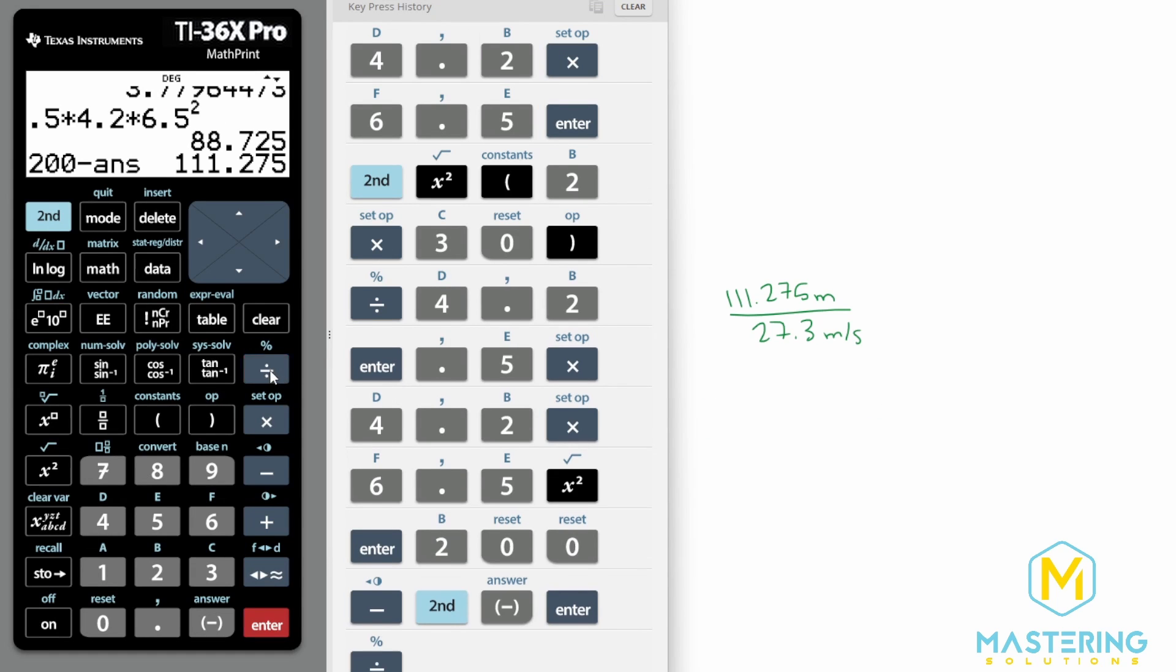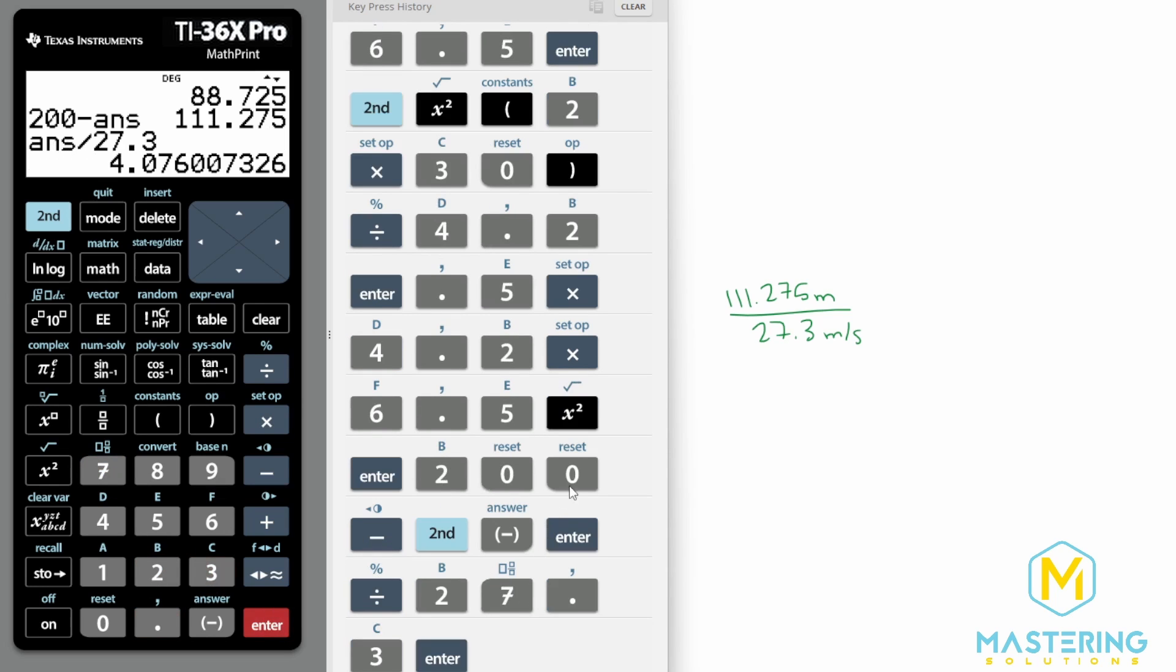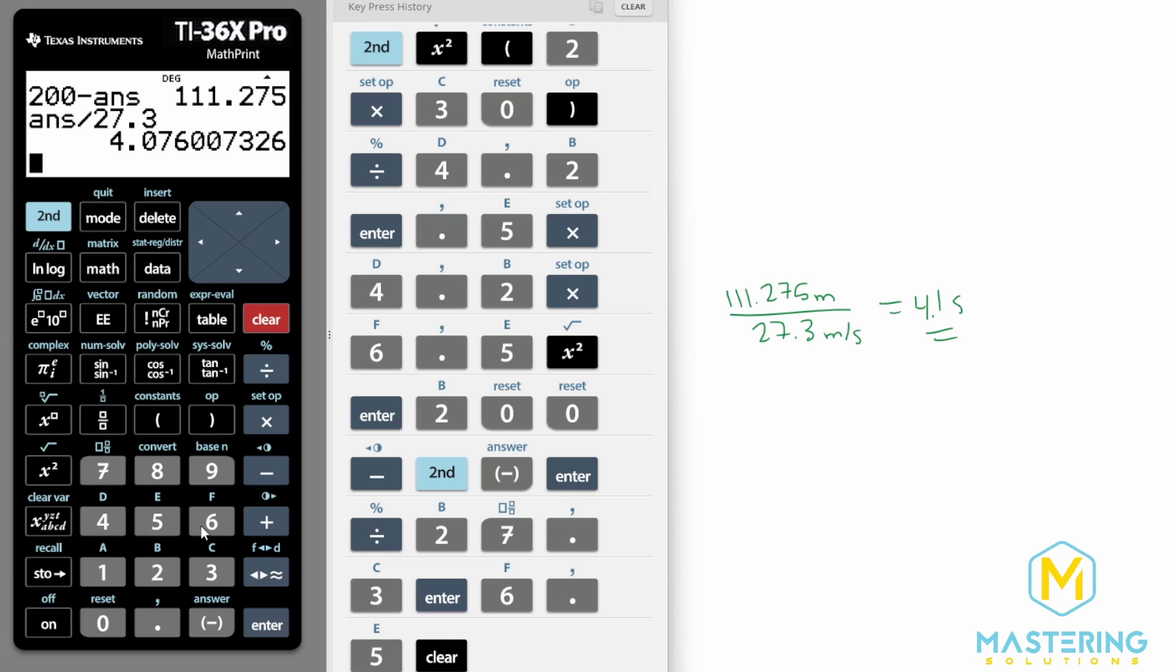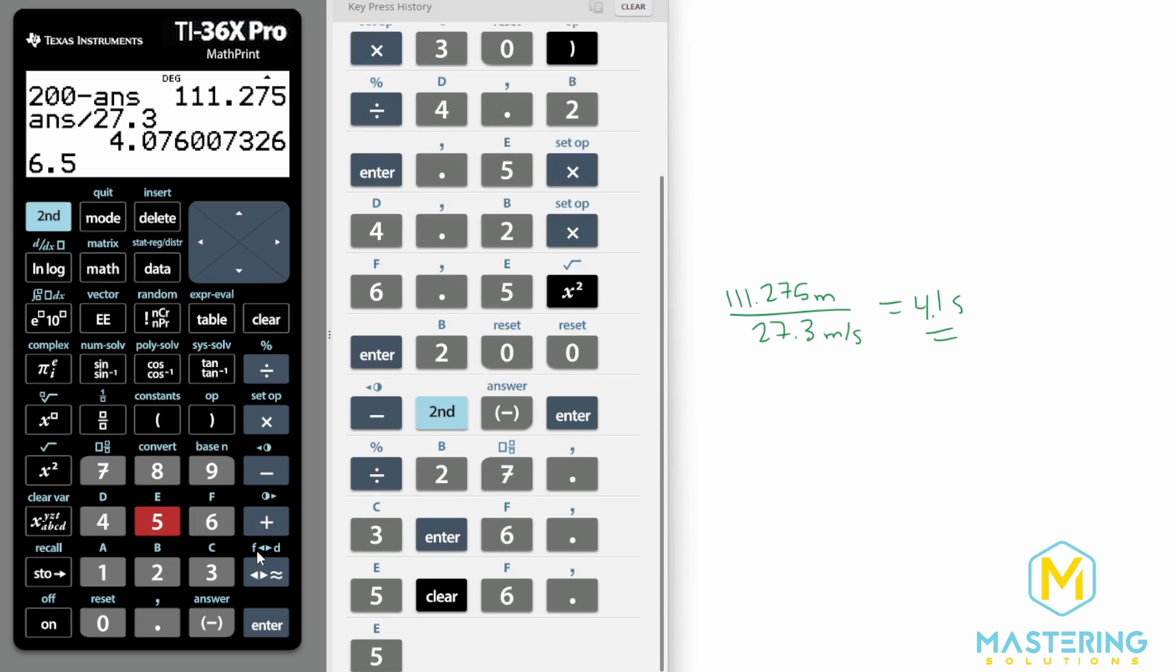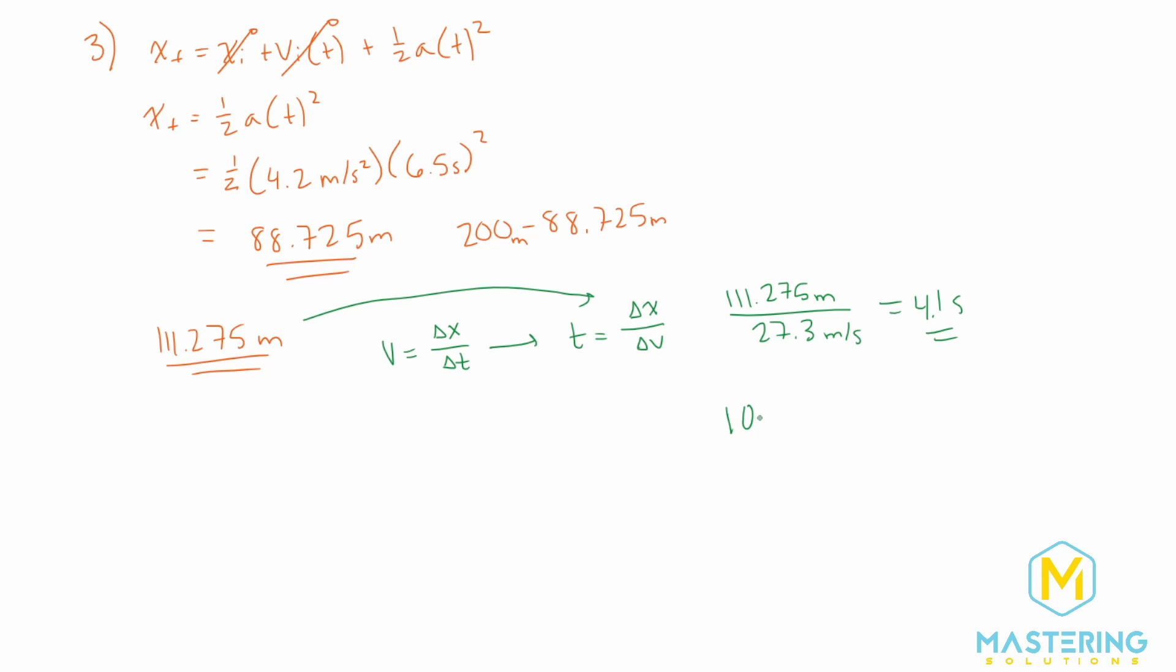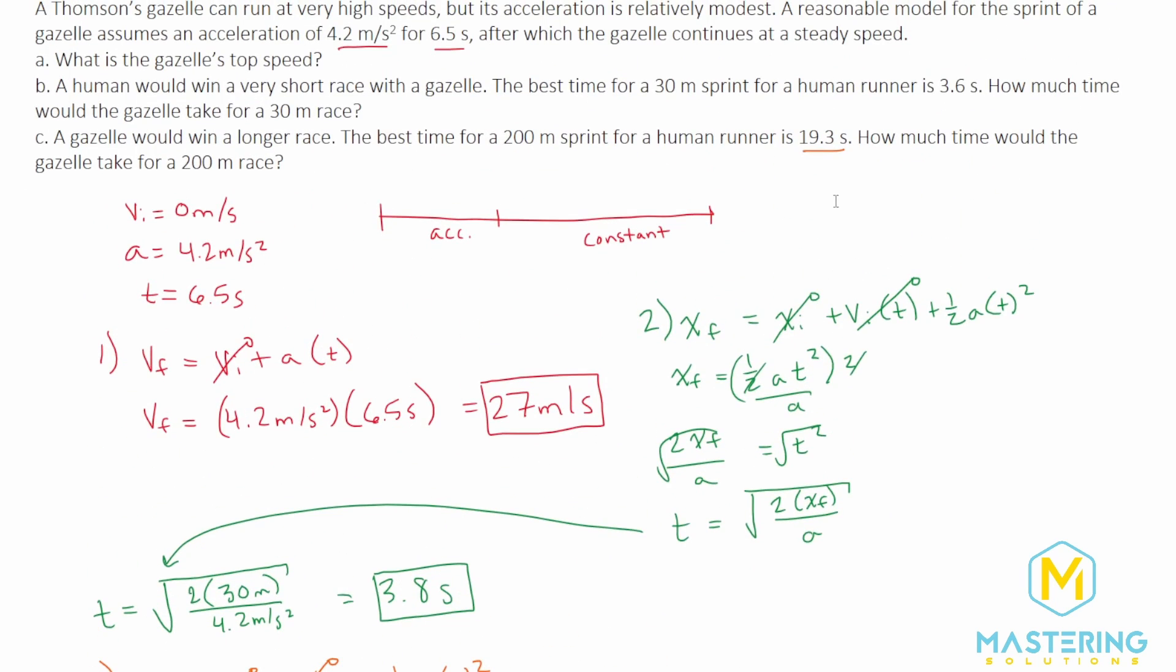So we have that answer divided by 27.3 gives us 4.06. We'll round that to 4.1. So 4.1 seconds for that section. But the total time that will run for this race is 6.5 plus 4.1, giving us 10.6. So we have 10.6 seconds for the 200 meter sprint for the gazelle. And the human can only run it in 19.3 seconds.